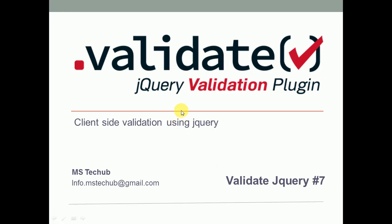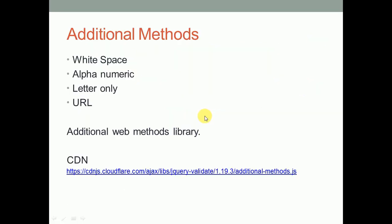Welcome to MS Tech Hub. This is the continuation of the validation series. In this video, we are going to discuss additional methods for validation of white space, alphanumeric, letters only, and URL validation. We are going to validate these using the additional methods library, which is available on a CDN — the link will be provided in the description.